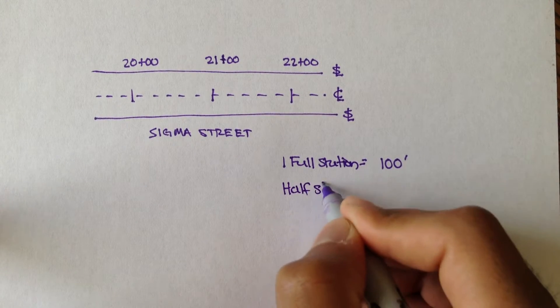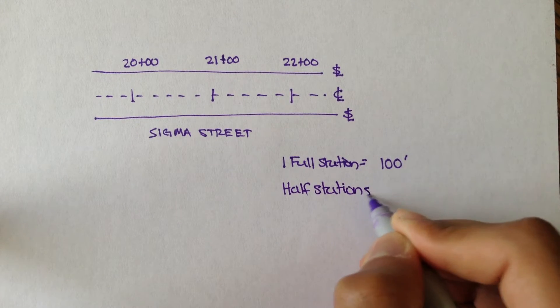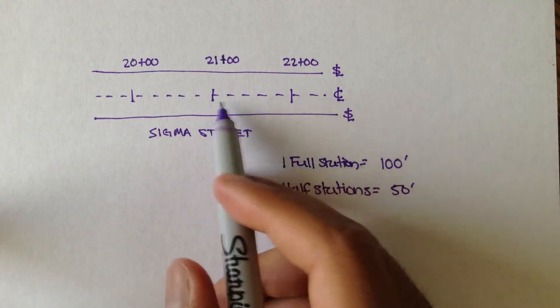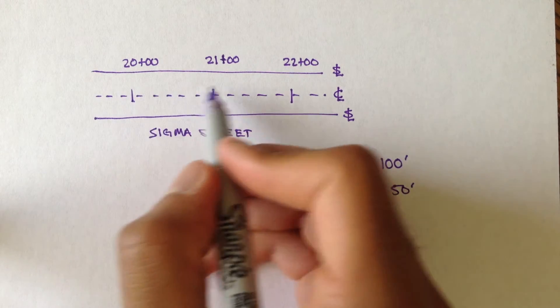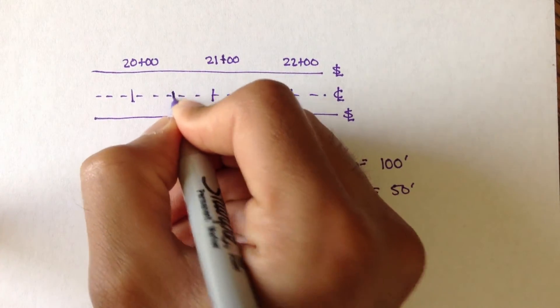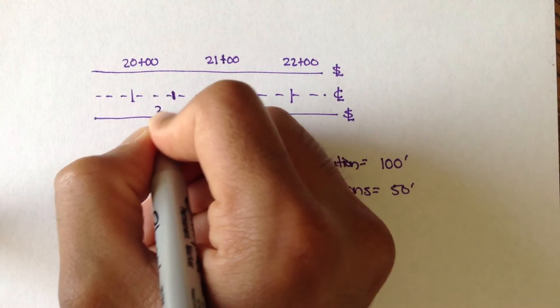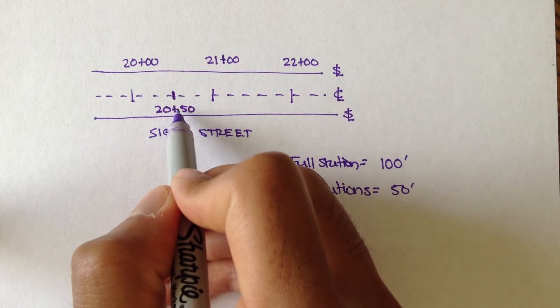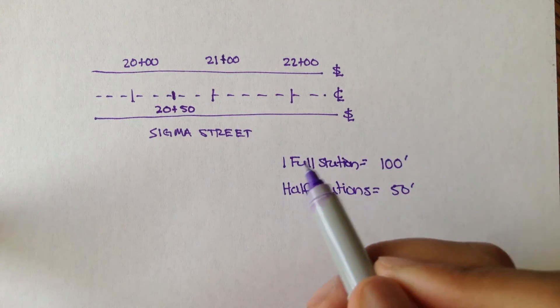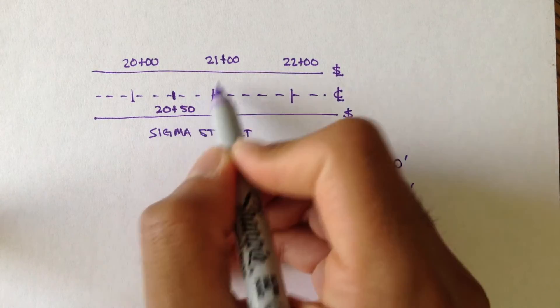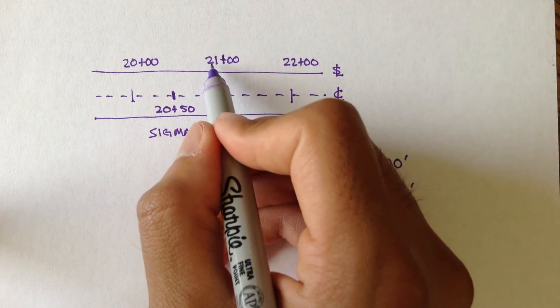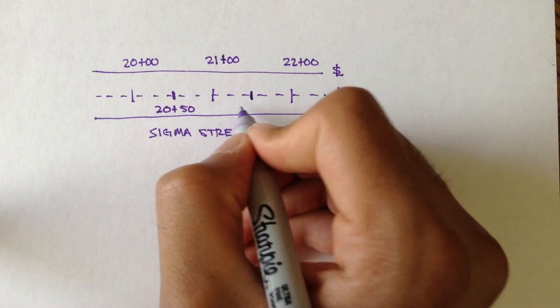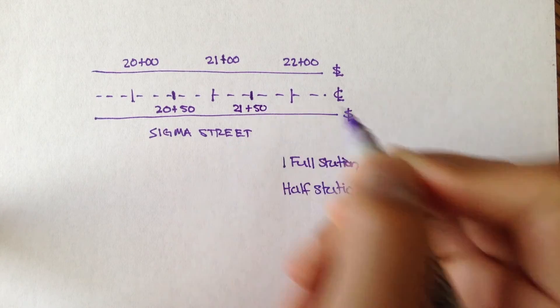Half stations. You can probably guess. Half stations are measured out every 50, or half of the full station interval. So between 20 plus 00 and 21 plus 00, we can put a half station right at the middle. And we can call it 20 plus 50. Because from 20 plus 00 to 20 plus 50, there's 50 feet. And from 20 plus 50 to 21 plus 00, it's 50. Between stations 21 plus 00 and 22, there's a half station of 21 plus 50.